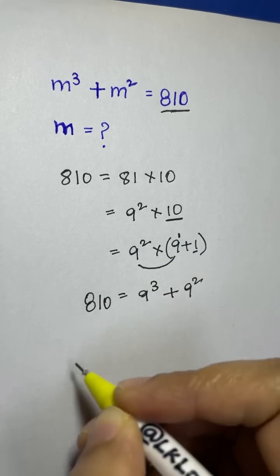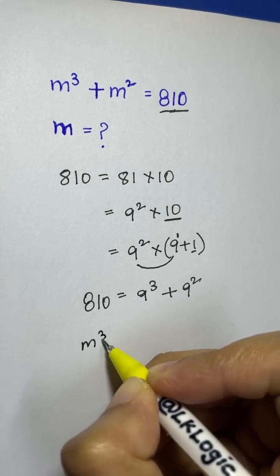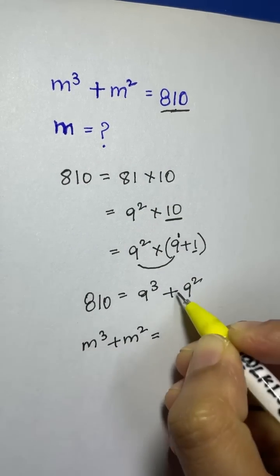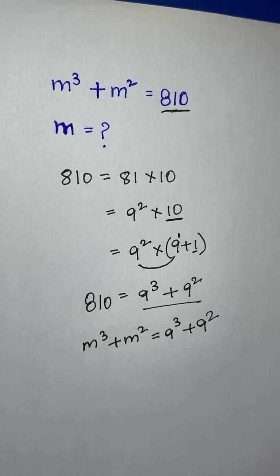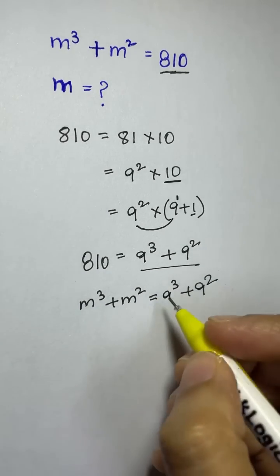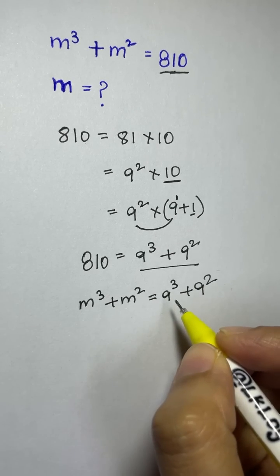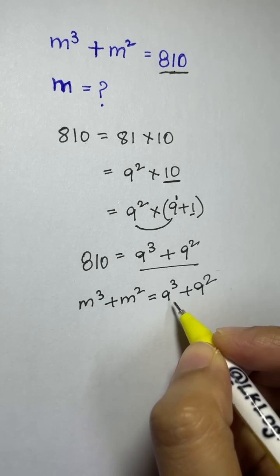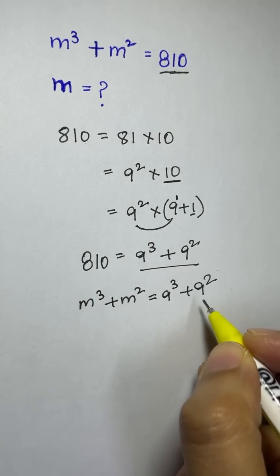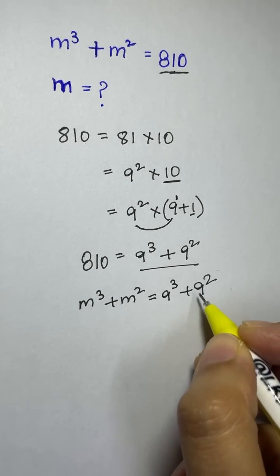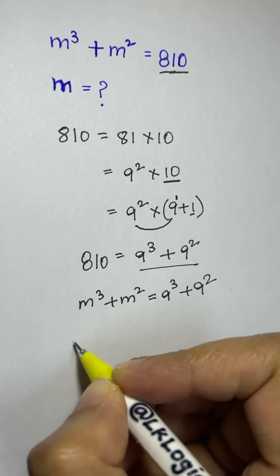So we have split up 810 into 9 cubed plus 9 squared. Writing that in place of 810: m cubed plus m squared equals 9 cubed plus 9 squared. By comparing both sides you can easily identify the first factor — m is equal to 9.